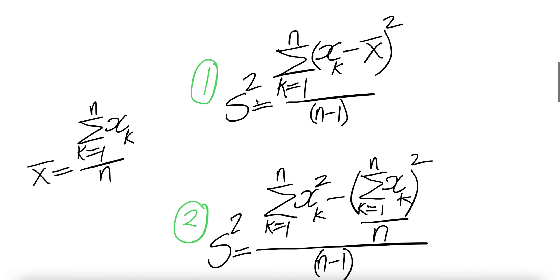First form, s square equals summation k goes 1 to n, xk minus bar x whole thing square divided by n minus 1. Bar x is summing all the observations, the n observations and then divided by n.